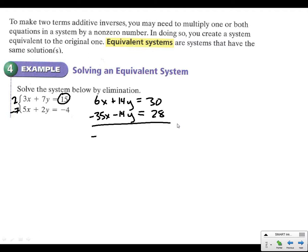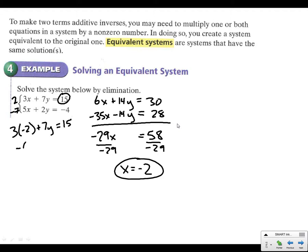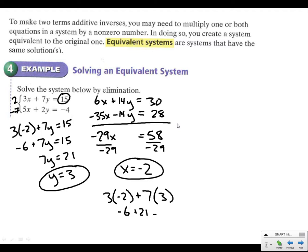If we add straight down, we get negative 29X equals 58. We divide that, and that comes out clean as X equals negative 2. Love it when it works out nice and pretty. So we're going to go ahead and plug it back in. Let's do it with the top one. 3 times negative 2 plus 7Y equals 15. That's negative 6 plus 7Y equals 15. So 7Y equals 21. So Y equals 3. Two answers. We can check them both. 3 times negative 2 plus 7 times 3. That's negative 6 plus 21. And that does equal 15. Let's check the other one. 5 times negative 2 plus 2 times 3. So that's negative 10 plus 6. And we want negative 4. And that's what we get.